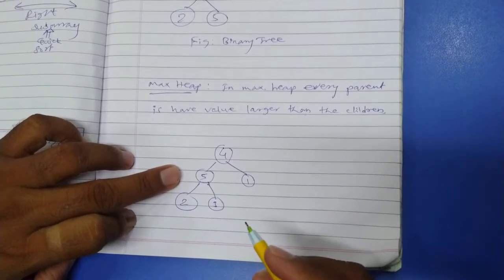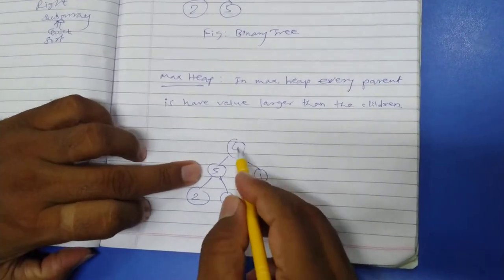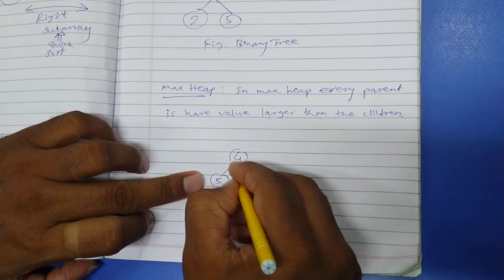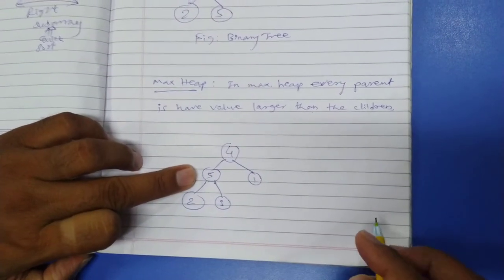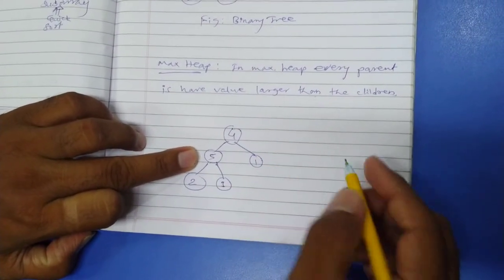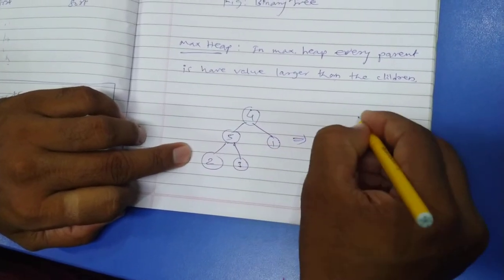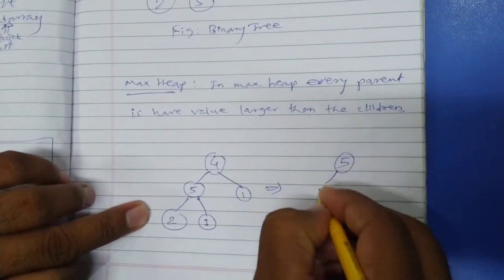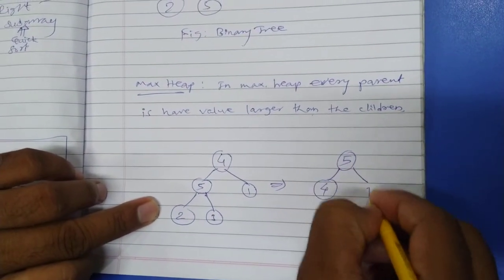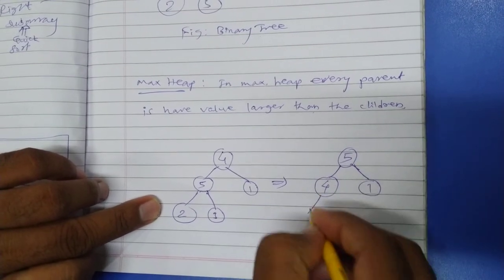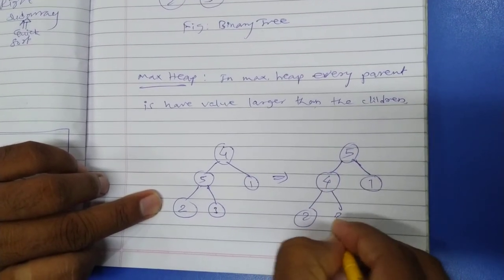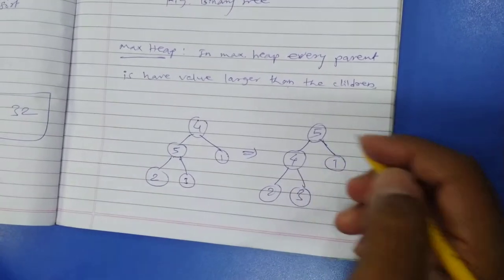Again, is the entire tree a MaxHeap? No. There is a problem with the root node. Now we need to swap 5 and 4 so that this goes to 5, 4, 1, 2, 3. Now this goes to the root node. Right?